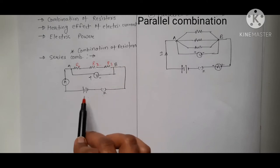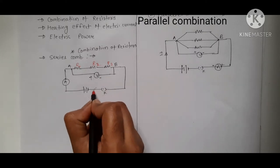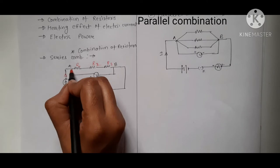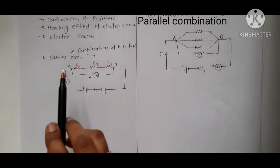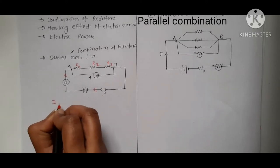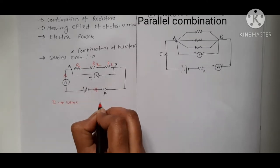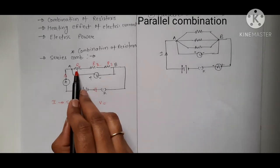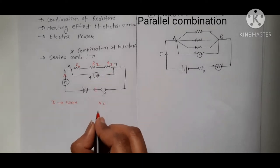In a series circuit connected with a battery, ammeter, and voltmeter, when the key is closed, current starts flowing. When current reaches point A, it gets only a single path — from A to B — so the current is the same through every resistor. The current I is the same for R1, R2, and R3. However, the potential difference is different across each resistor.